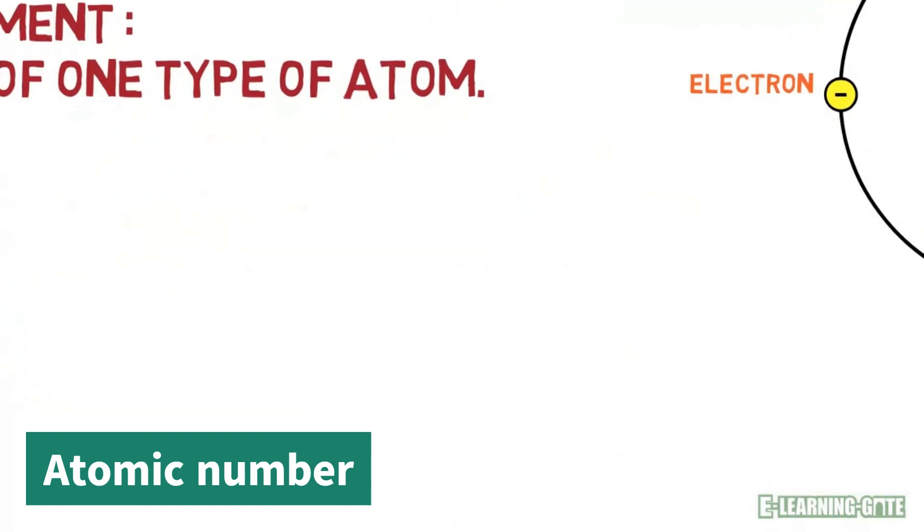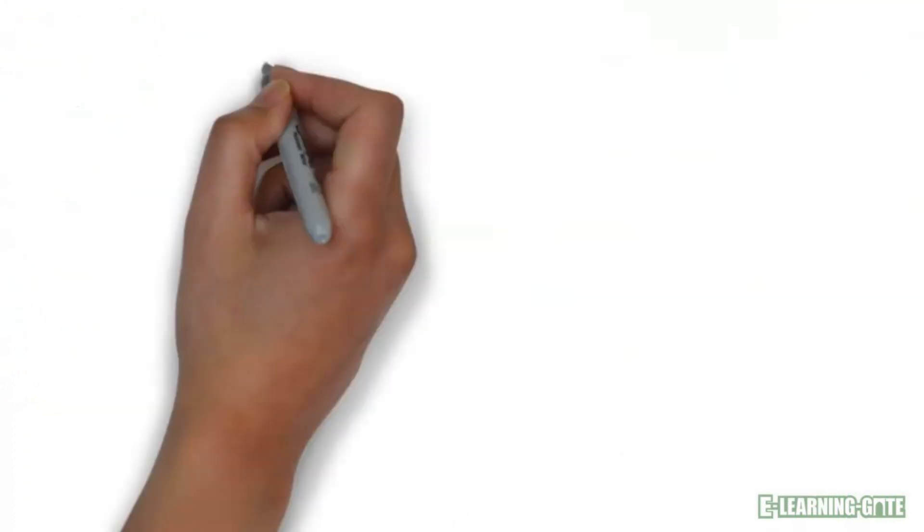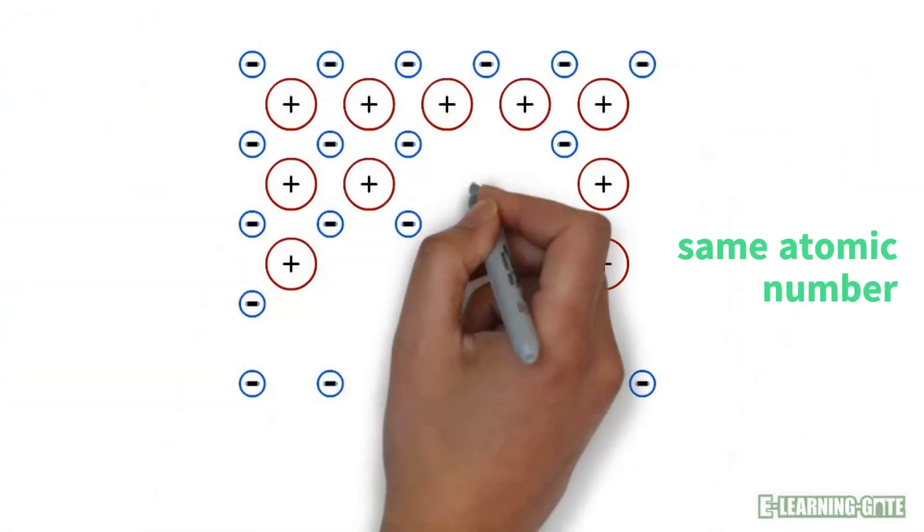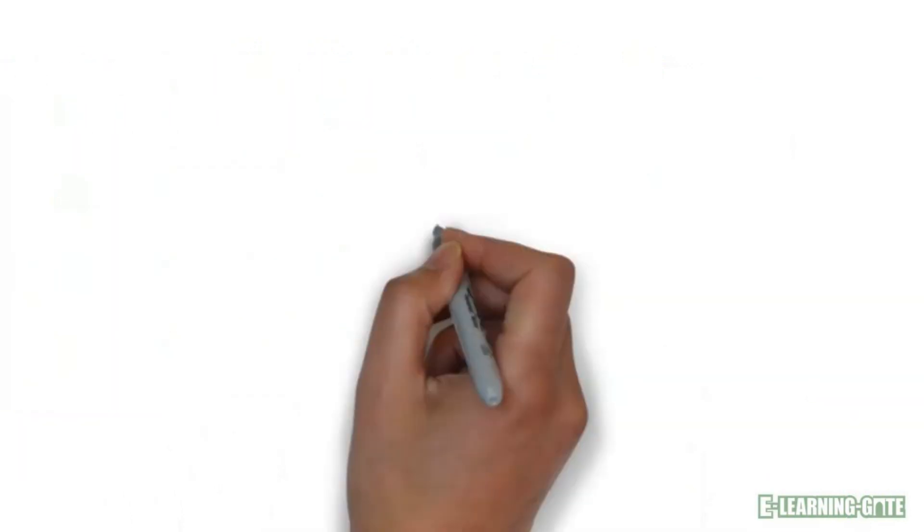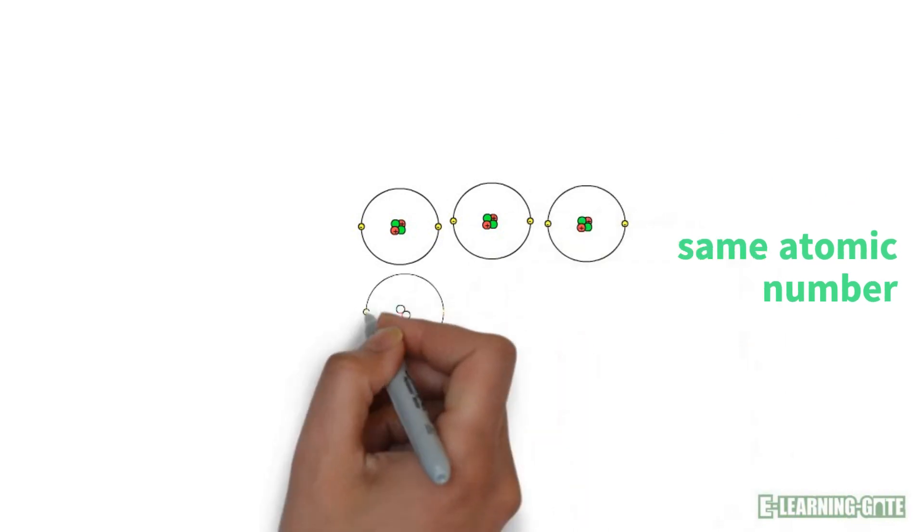Every element has a different atomic number. If an element has 100 atoms, then all these 100 atoms must be one type, which means they all have the same atomic number. This collection of 100 atoms with the same atomic number is an element.